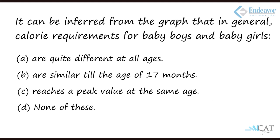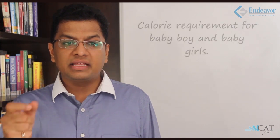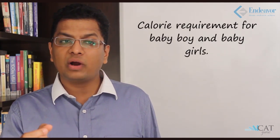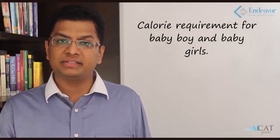The next question asks what can be inferred from the graph in general. There are four options. The first: calorie requirements for baby boys and girls are quite different at all ages. This is not true because at two months and eight months they are the same, so they are not different at all ages. We cannot mark option one as true.